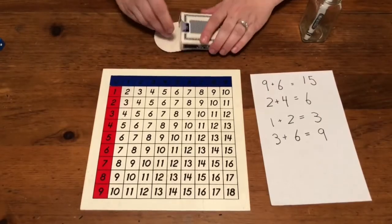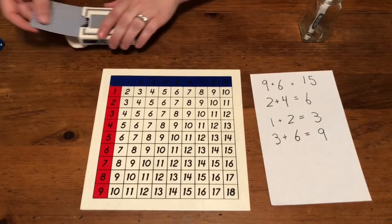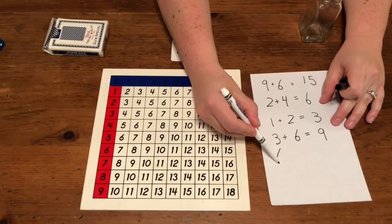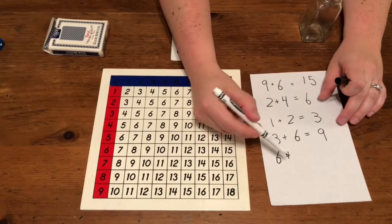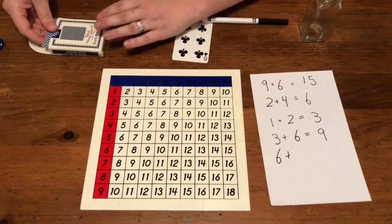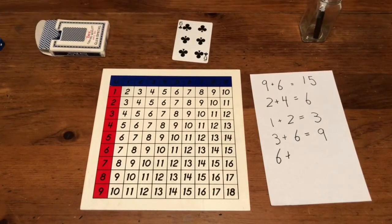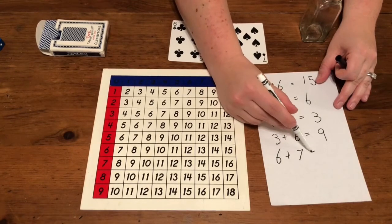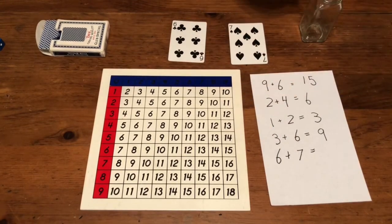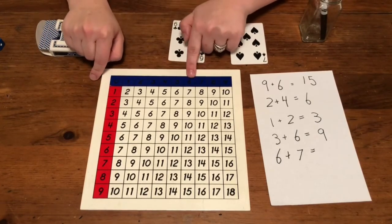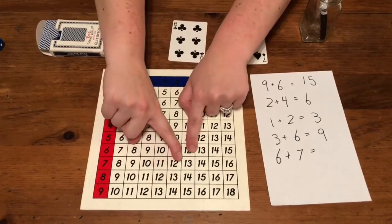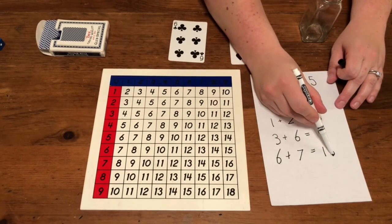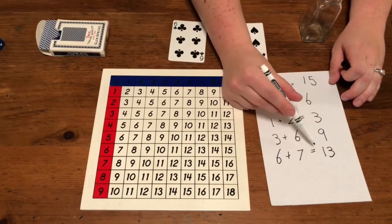Let me show you how to use a deck of cards. Six. Six plus seven. Seven. Let's find the answer. Our first number is six, our second number is seven. Find where they meet. Thirteen. Six plus seven equals thirteen.